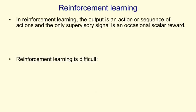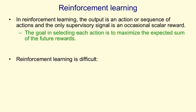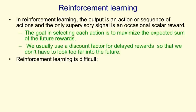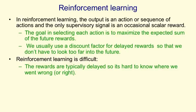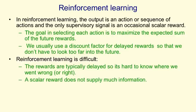In reinforcement learning, the output is an action or sequence of actions, and you have to decide on those actions based on occasional rewards. The goal in selecting each action is to maximise the expected sum of the future rewards, and we typically use a discount factor so that rewards far in the future don't count for as much as rewards you get fairly quickly. Reinforcement learning is difficult because the rewards are typically delayed, so it's hard to know which action was wrong in a long sequence. Also, a scalar reward that only occurs occasionally does not supply much information on which to base changes in parameters, so typically you can't learn millions of parameters using reinforcement learning, whereas in supervised and unsupervised learning you can.